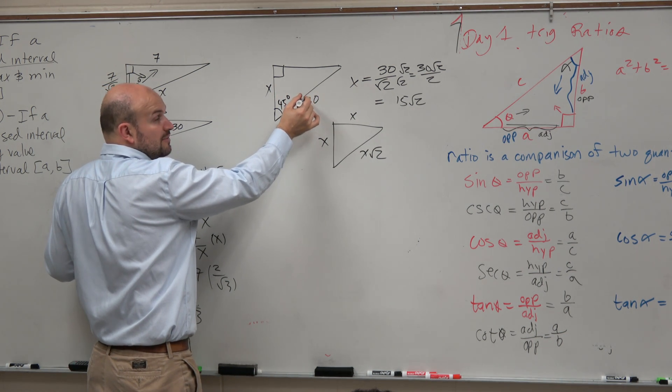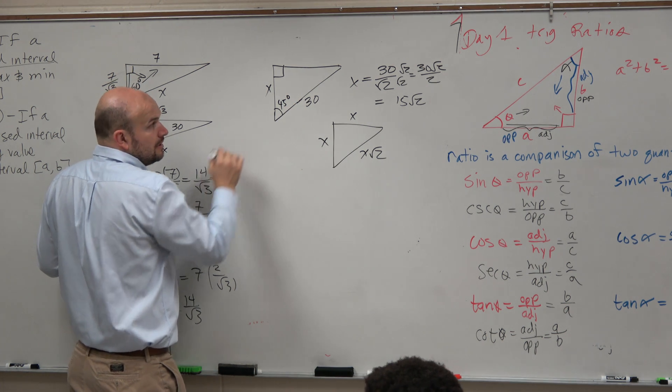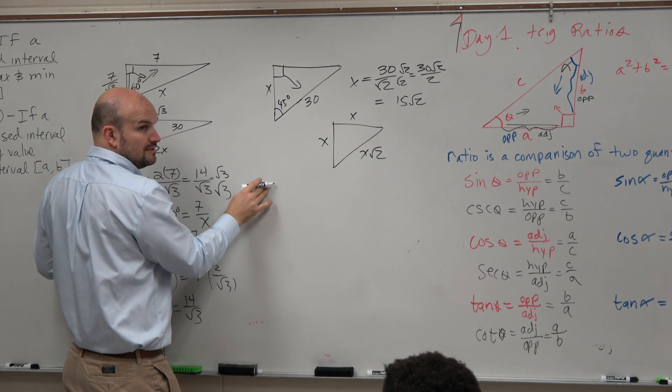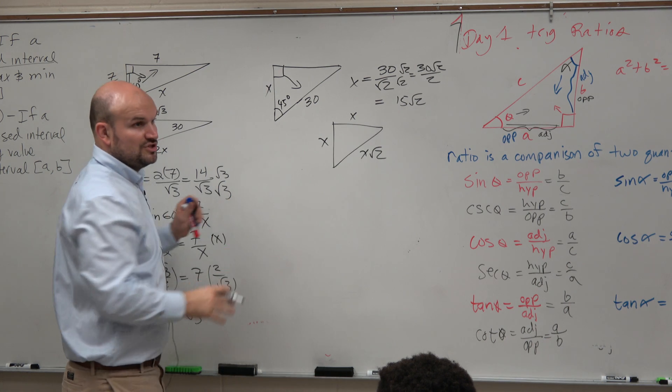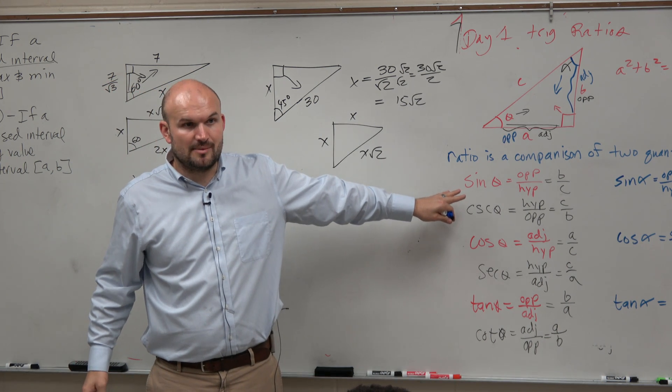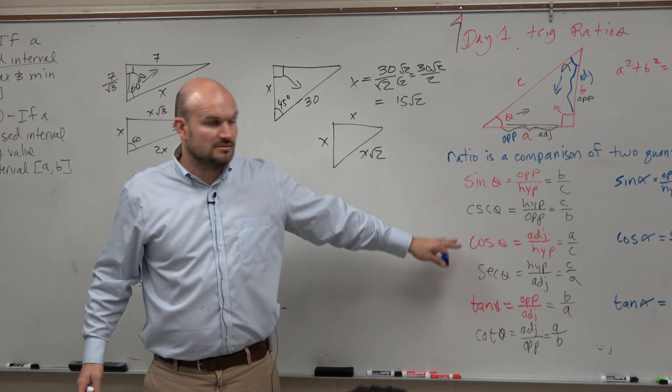So what is 30 that represents, the adjacent, opposite, or hypotenuse? Hypotenuse. What is this x? Adjacent. Which trigonometric function deals with adjacent and hypotenuse? Cosine.